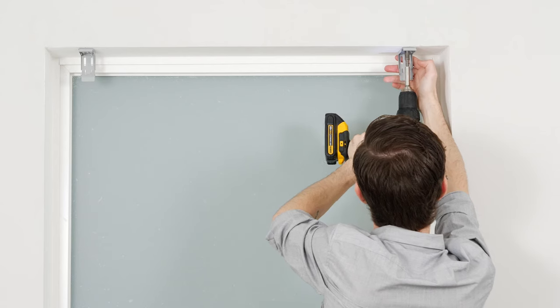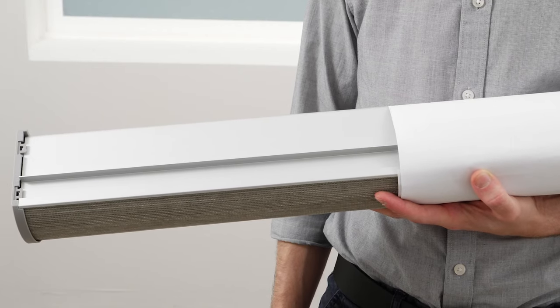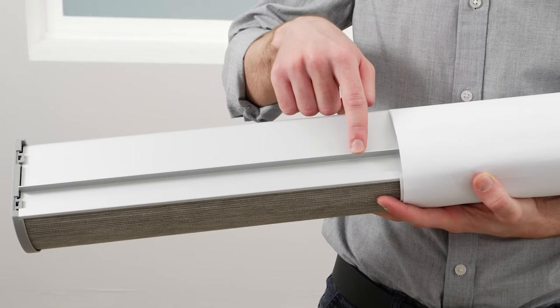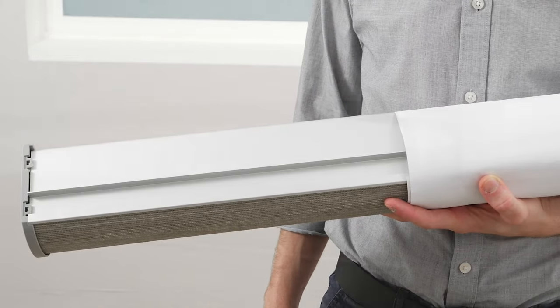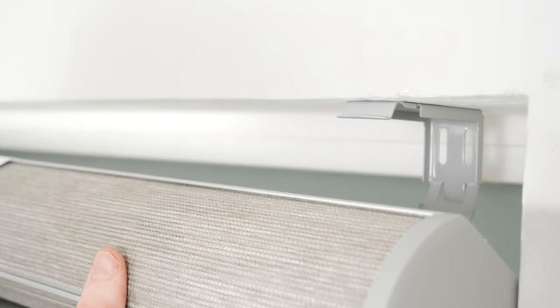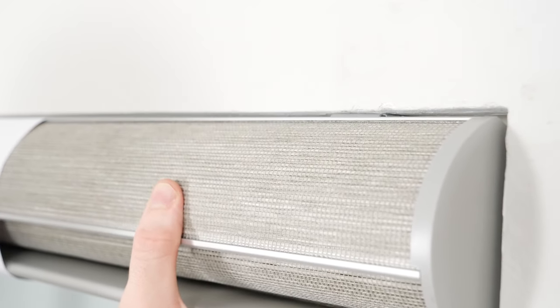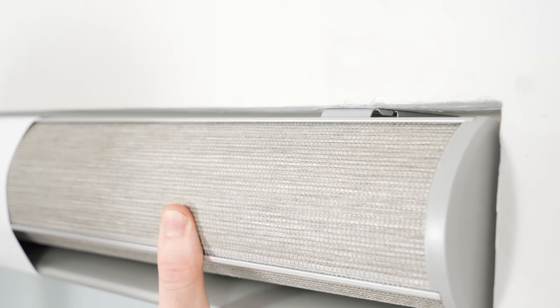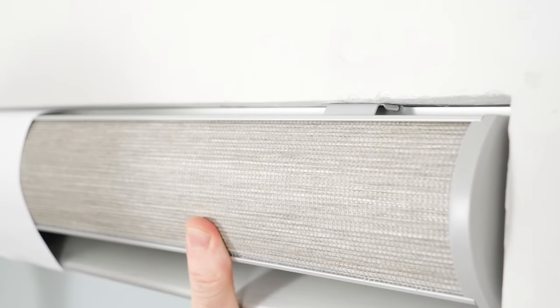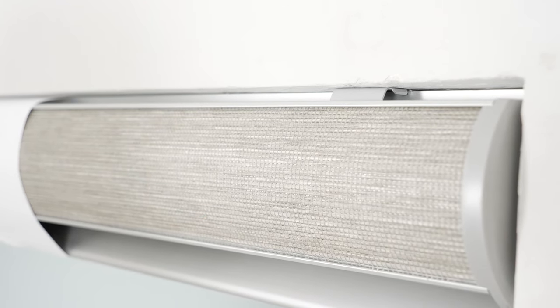Once the brackets are lined up, finish drilling the screws in all the way. Now we're going to put the cassette onto the brackets. See this little groove on the top? That's where the brackets will snap onto it. Grasp the cassette so the front of the shade is facing you and rest the top of the cassette on the top lip of the brackets. Push the bottom front of the headrail firmly back toward the wall until it catches onto the back of the brackets and snaps into place.